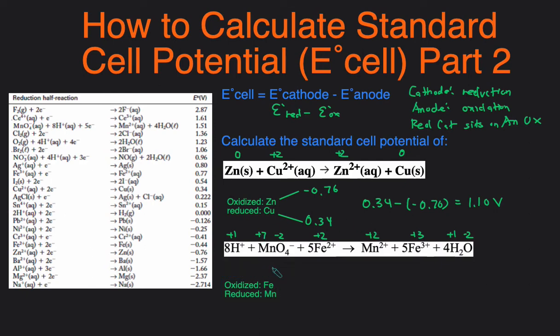Now let's take a look at the reduction potentials for both the Fe and the Mn. So the Fe, we're looking for the one that has Fe2+ and Fe3+ in it. And that's going to be this reaction right here. So its potential is 0.77 volts. And the next one we're looking for the reaction that has MnO4- and Mn2+ in it. And it's this one right here and that's 1.51 volts.